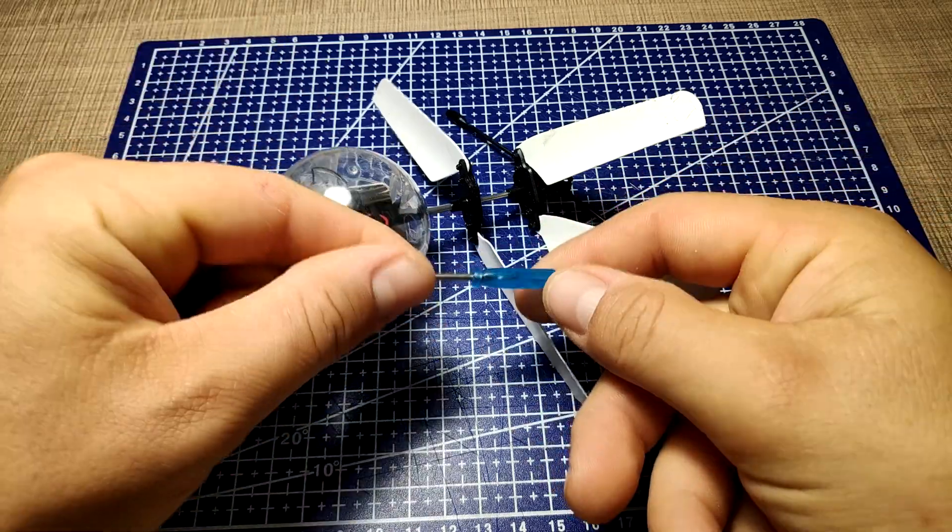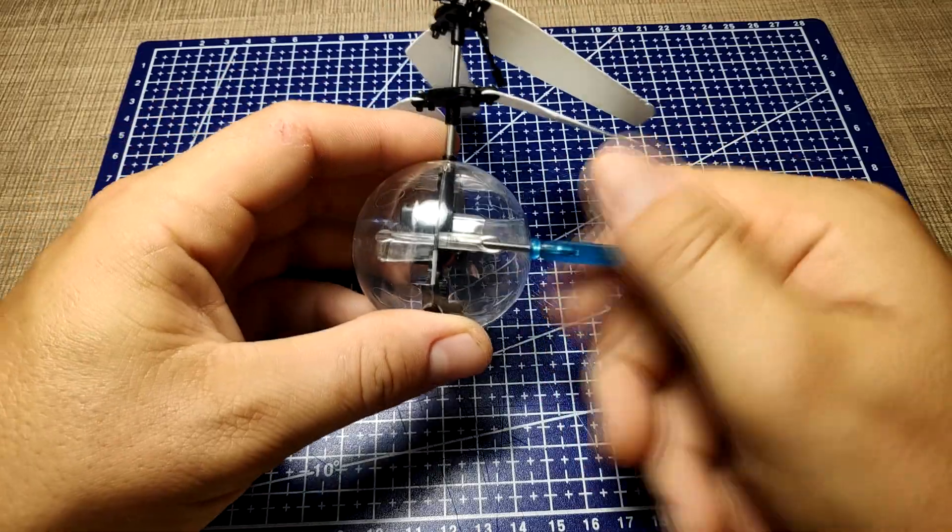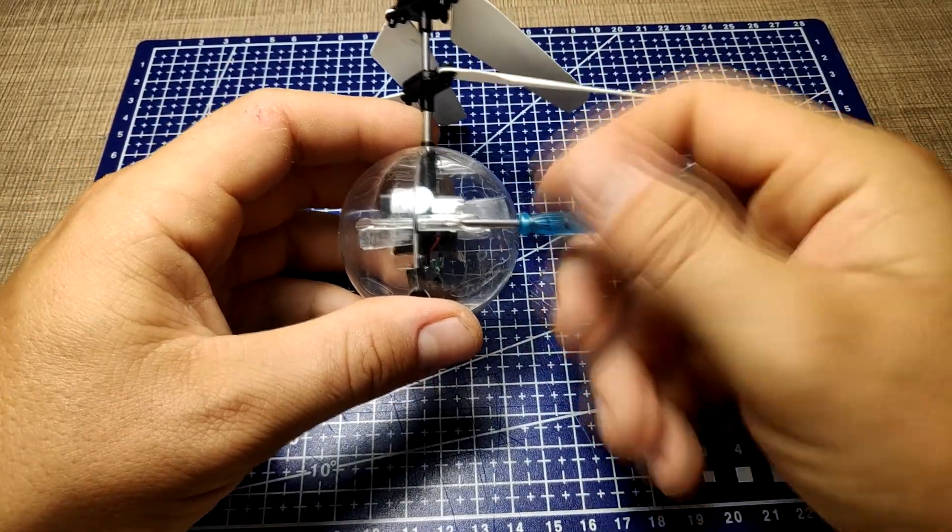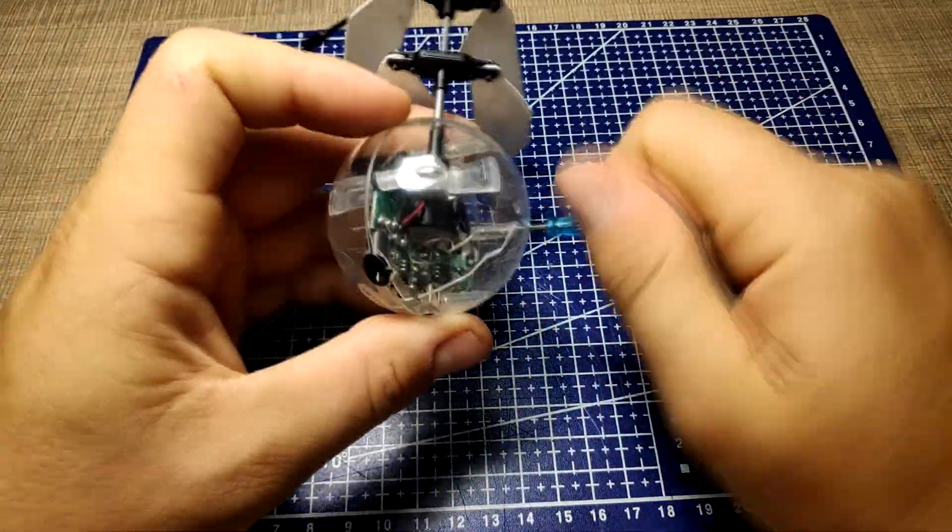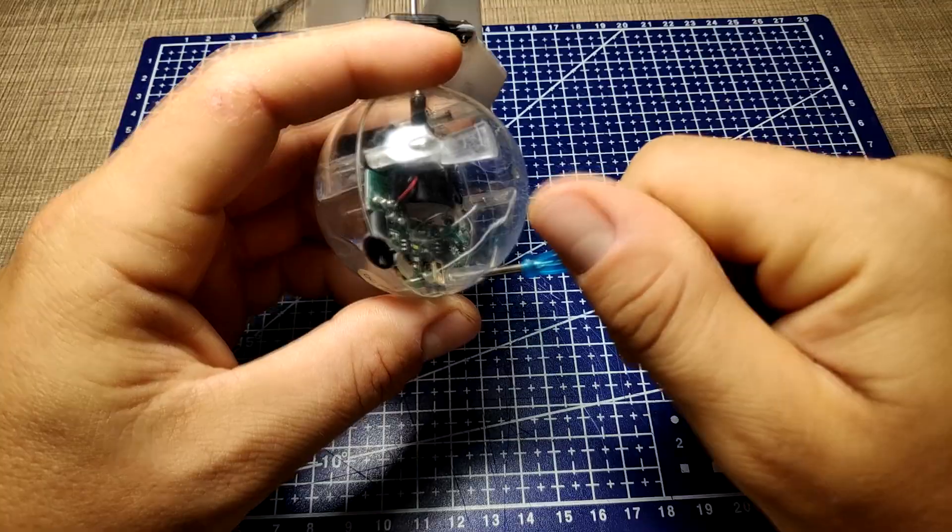To start investigating what the fault was, I first grabbed the smallest screwdriver I have and I removed the four screws that were holding the two halves of the toy together. What I had in mind at the time was that somehow the battery was over discharged so I focused my investigation toward it.